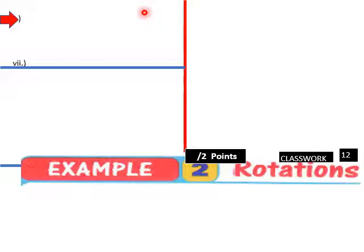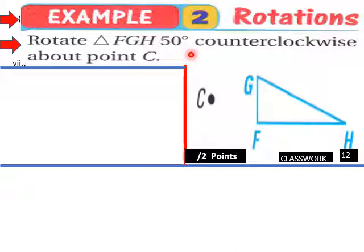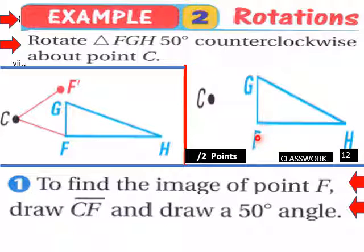Okay, getting into our next example here. Part 2 of this lesson, rotations. Rotate triangle FGH 50 degrees counterclockwise about point C. So we need to rotate this 50 degrees. Okay, define the image of point F here. Where do we put that? What we need to do is to draw a line segment CF and then draw a 50 degree angle. So first we connect F to C here like this. And then this is going to be a 50 degree angle here. And then this will be F prime here. The same length here.